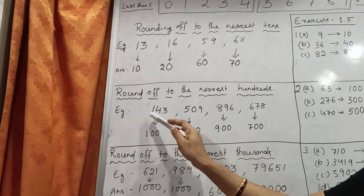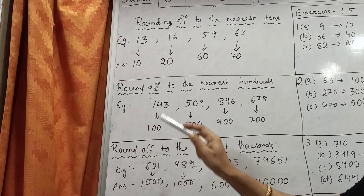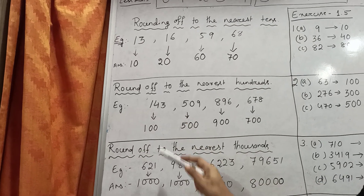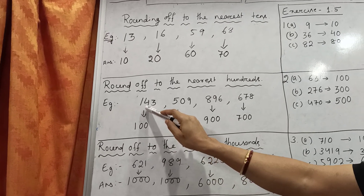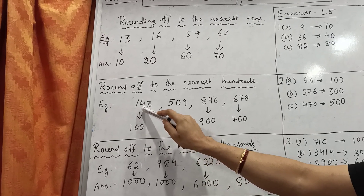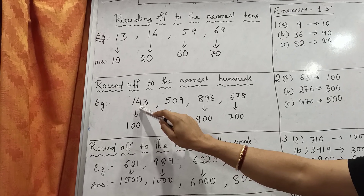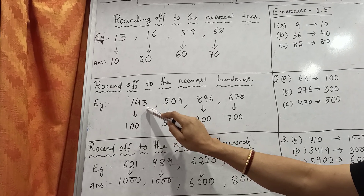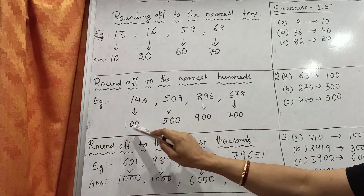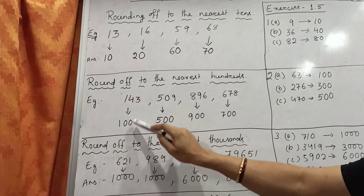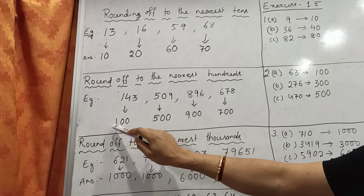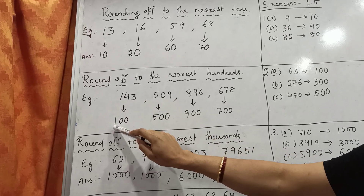See the example. Here is 143. The tens digit is 4, which is less than 5. So the tens and units places become 0, 0 and the hundreds digit remains the same. So 143 rounded to the nearest 100 is 100.